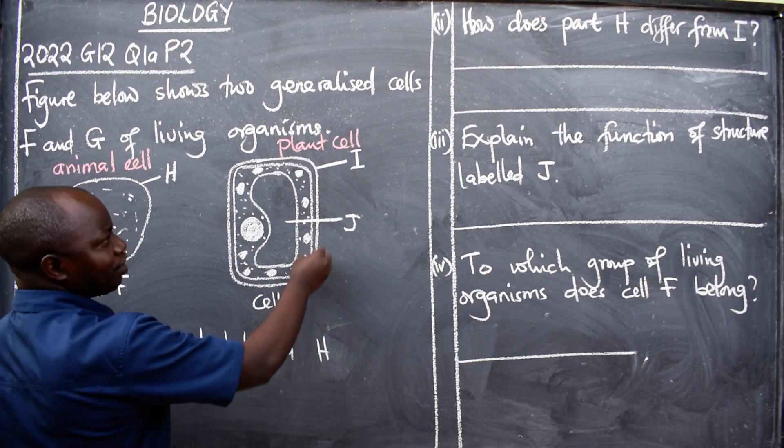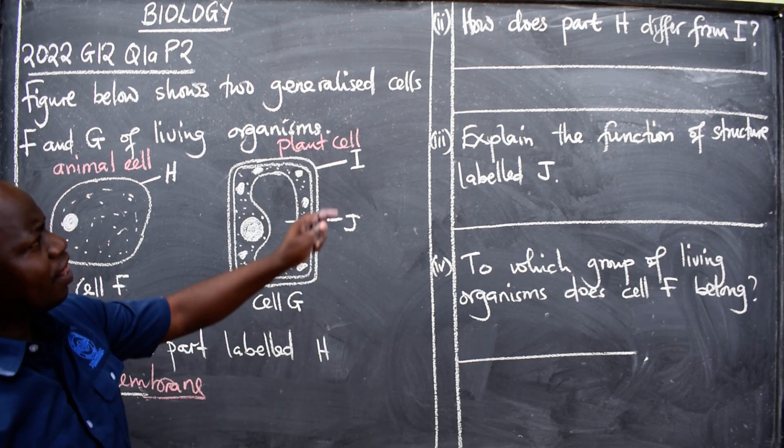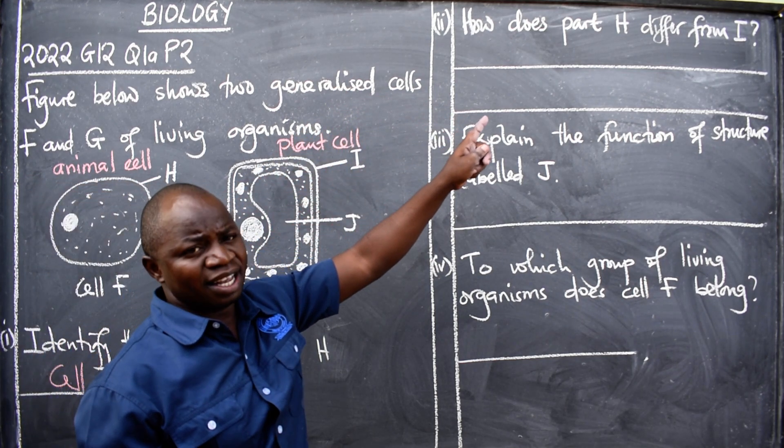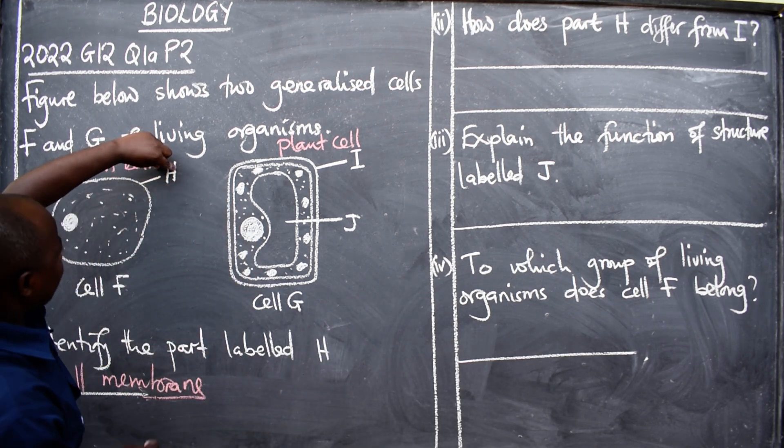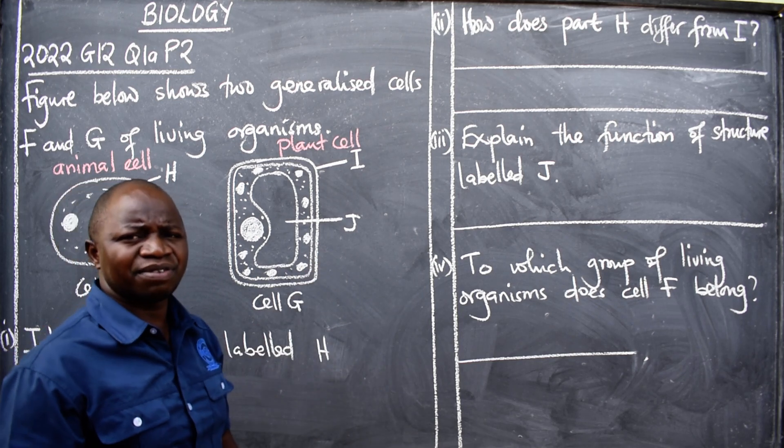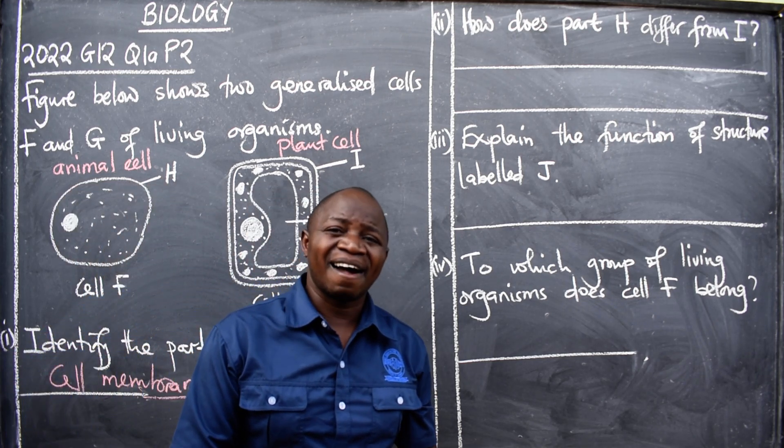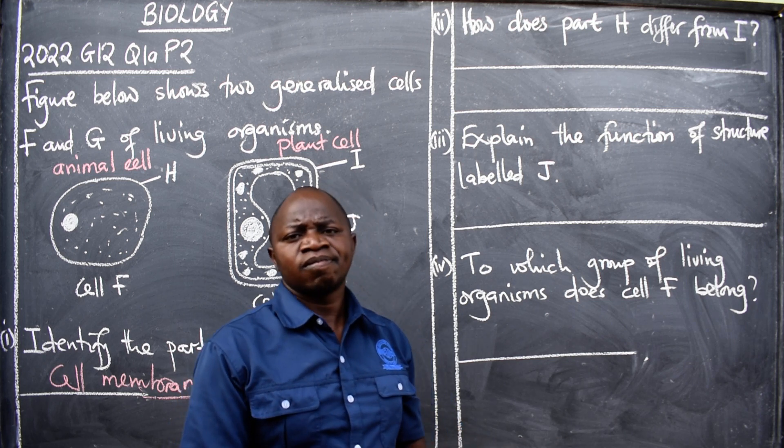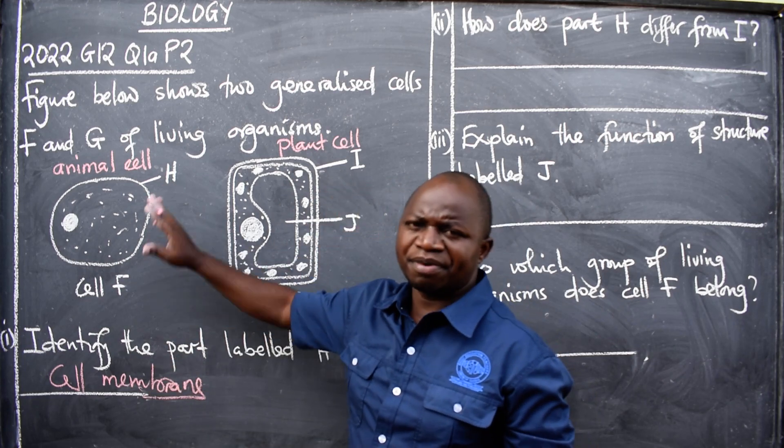Like this, so that is the correct answer for the first one. Which one is the cell membrane here? It's this one here, it's this one here, not this. So take note of that. Then we have: how does part H differ from I? How does this one, cell membrane, differ from cell wall? What's the difference? So you need to know their functions.